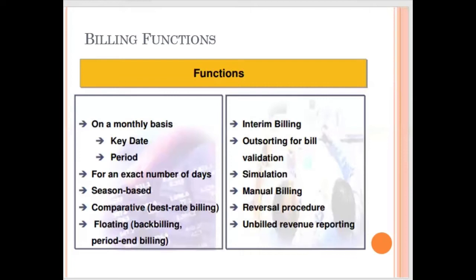Manual billing: we can generate billing anytime using a specific T-code to generate the billing document, where we need to pass all the details manually. We need a contract to do a manual bill. Once we do manual billing and release it, it goes for invoicing. For each type of reversal, the T-code is different — individual invoice reversal is EL13, billing reversal is EL20, and meter reading order reversal is EL37. We do reversals to make corrections.